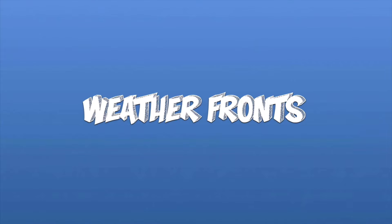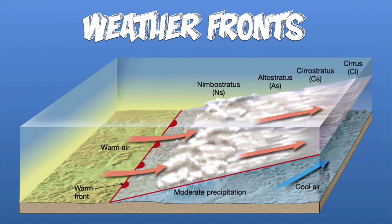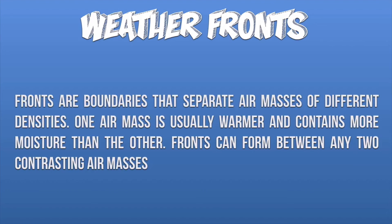In continuation of this discussion of weather maps, we're going to add weather fronts. Weather fronts involve looking at the interactions of air masses. In the previous Ed Puzzle video, we talked about the five major air masses that affect the United States. Now we'll look at what happens when two air masses come in contact, because one contains warm air and one contains cold air — they have to interact in a very specific way. The definition of a weather front is boundaries that separate air masses of different densities. One air mass is usually warmer and contains more moisture than the other, and fronts can form between any two contrasting air masses.